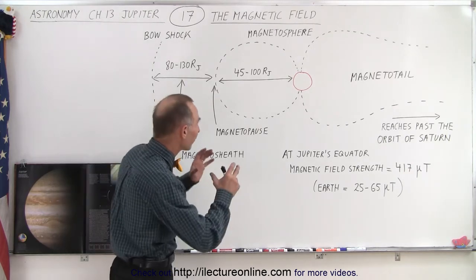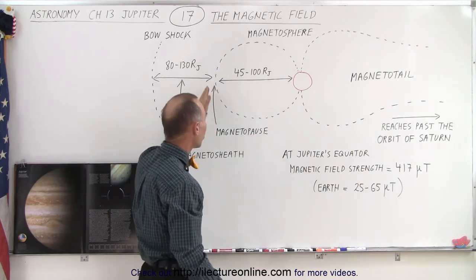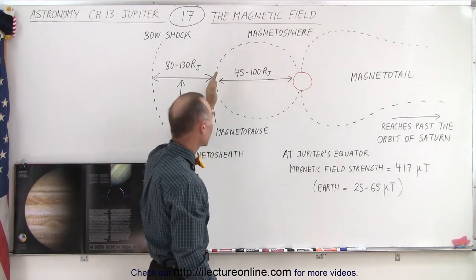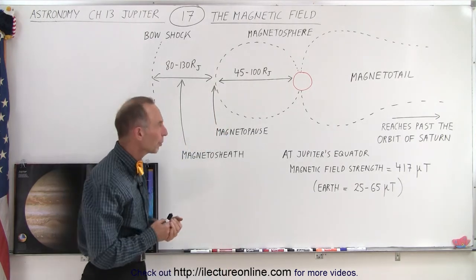A very powerful magnetic field is protecting the planet Jupiter. It builds up a very large magnetosphere in front of the planet which has a diameter of about 45 to 100 times the radius of Jupiter.